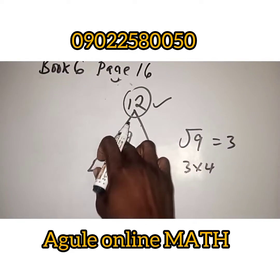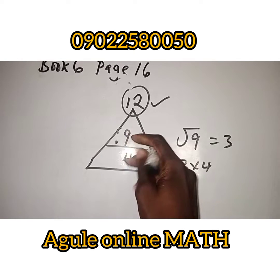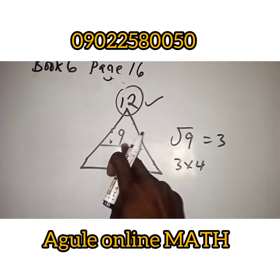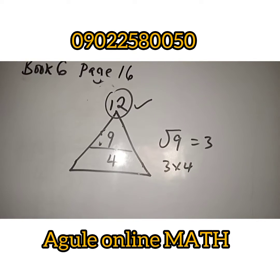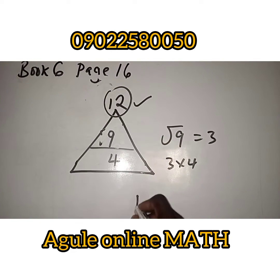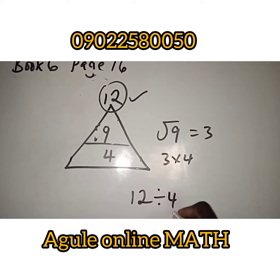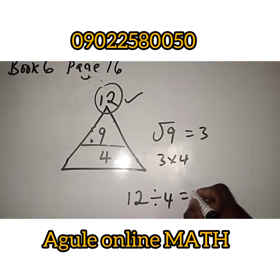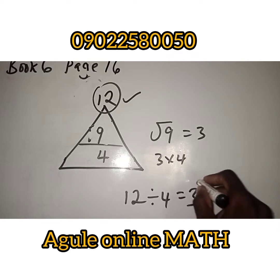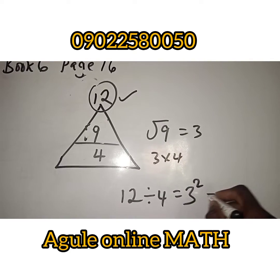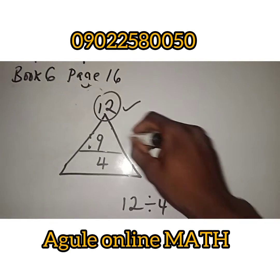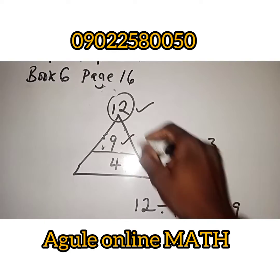So, if we want to get 9, do 12 divided by the 4 down, which will give you 3. So, 3 squared will give you 9. That is all to get the 9.